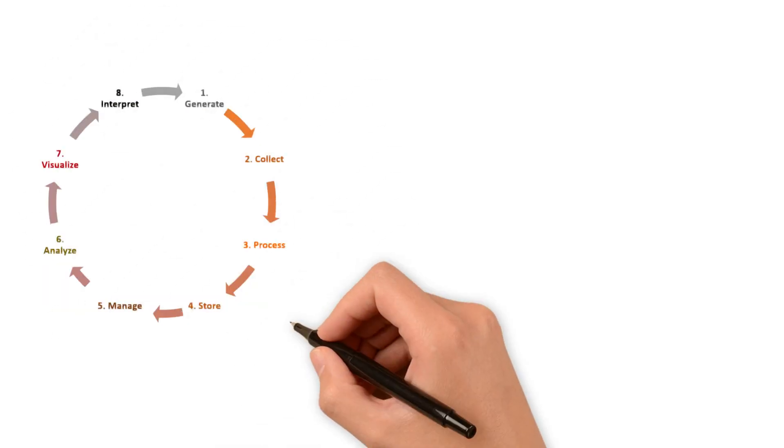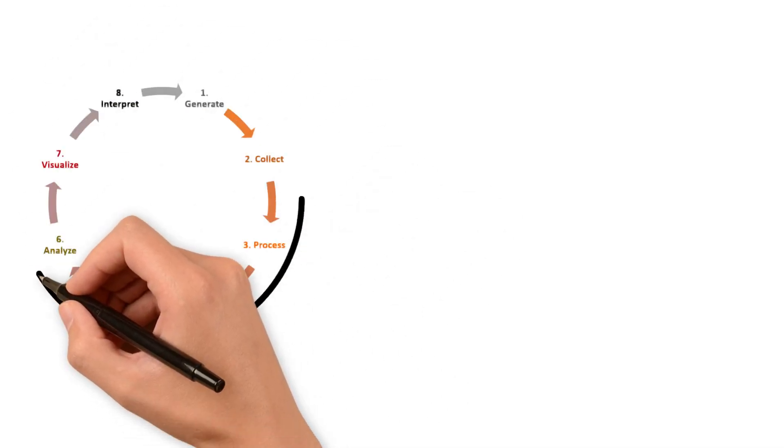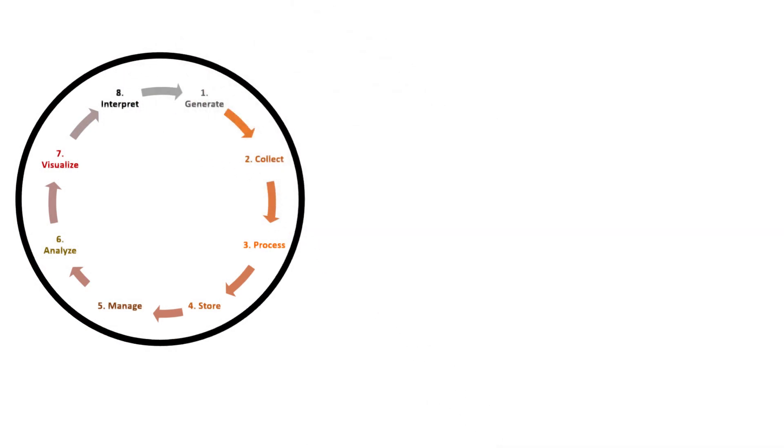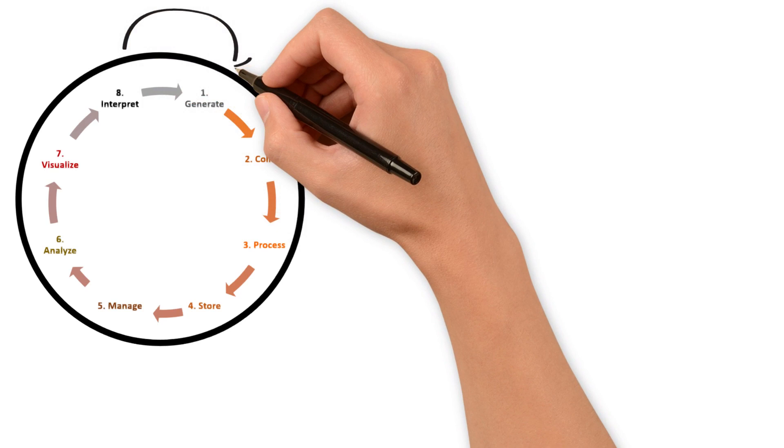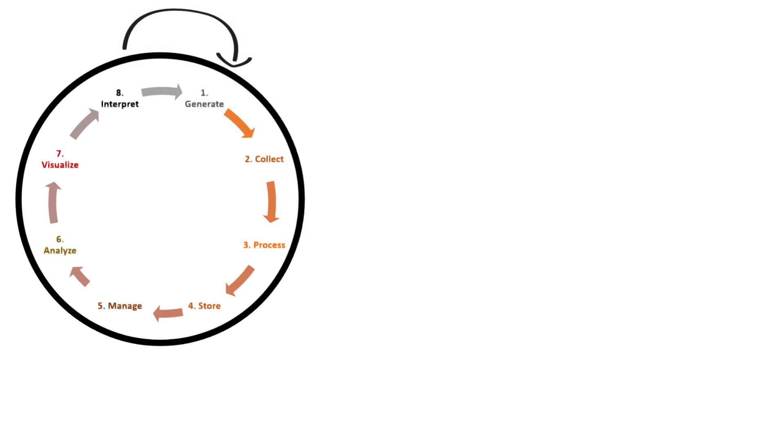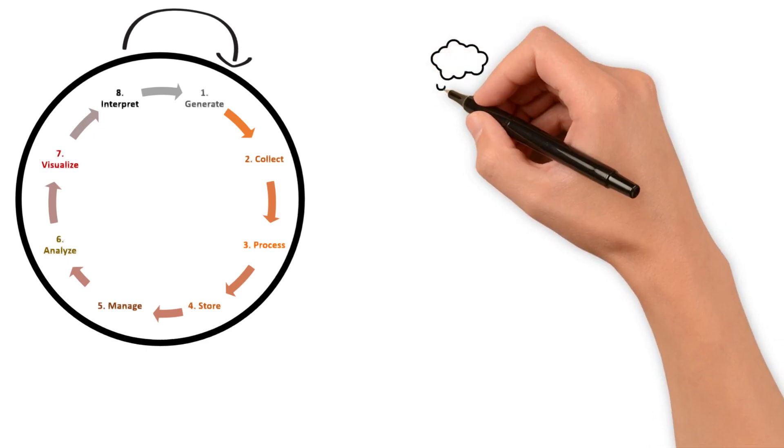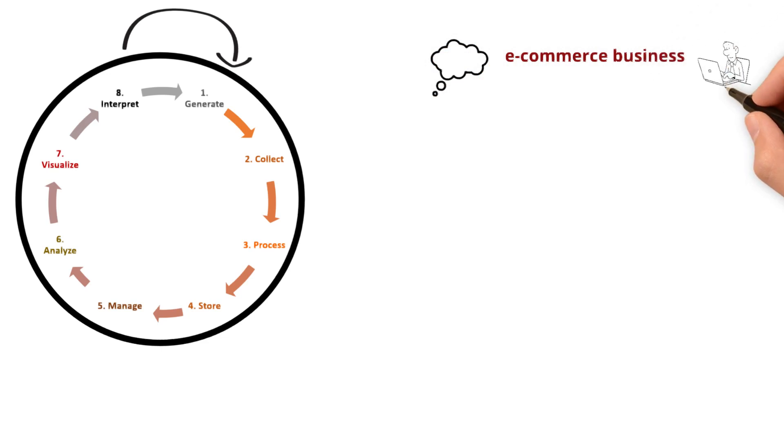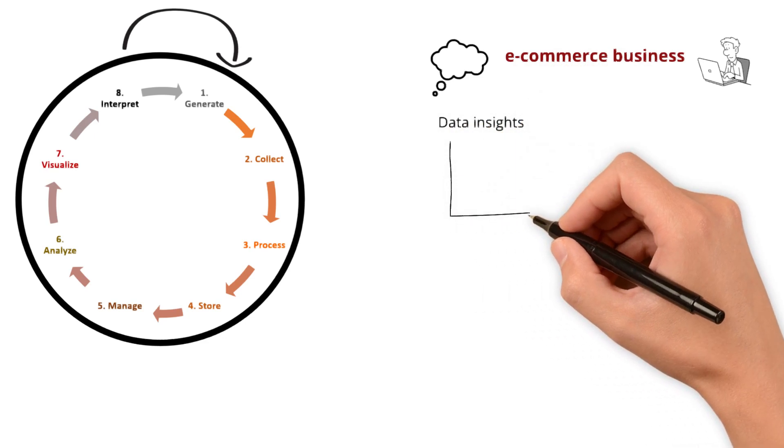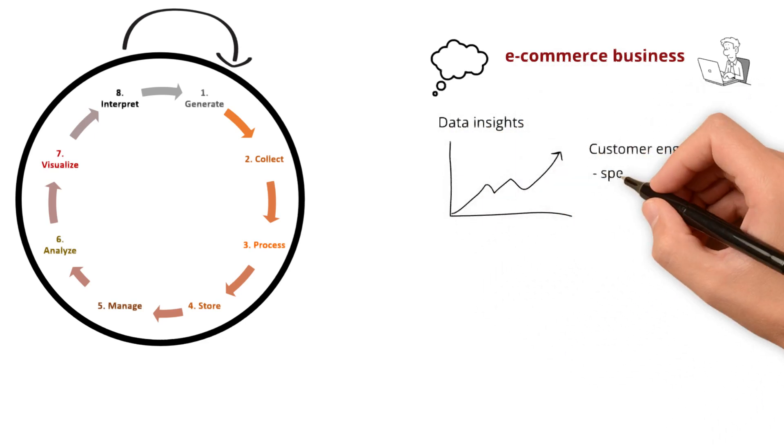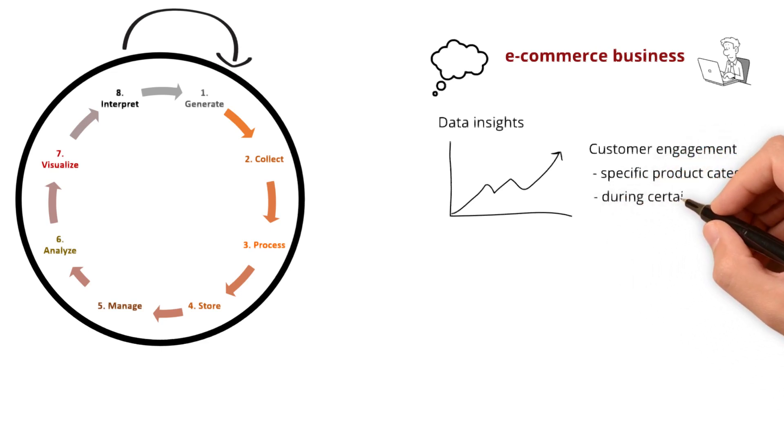So, with the interpret stage, it wraps up our data journey. Having said that, we are calling it a cycle. The interpreting stage must loop back to the very first generate stage. Right? Let's break it down. Imagine you are running an e-commerce business. In the interpret stage, you have unraveled the data insights that show a significant increase in customer engagement with a specific product category during certain seasons. Now, with this understanding, you decide to generate more targeted marketing campaigns for those specific seasons.